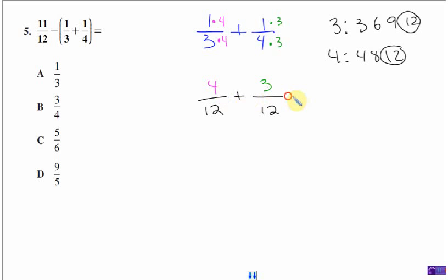Four plus three. Add them up now that they have the same denominator. Seven over twelve. Now, previously, we had this equation here. You had eleven over twelve minus the parentheses. And we just found the parentheses to be seven twelfths here. So let's go ahead and move that in there.